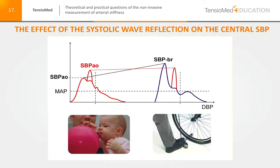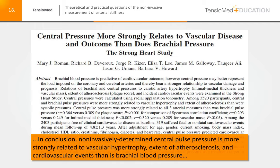We have nice data confirming the importance and significance of measuring the central aortic blood pressure. In the Strong Heart Study, it was proven that central pressure more strongly relates to vascular disease and outcome than does brachial pressure. It was found that central blood pressure is more strongly related to vascular hypertrophy, extent of atherosclerosis, and cardiovascular events than is brachial blood pressure.